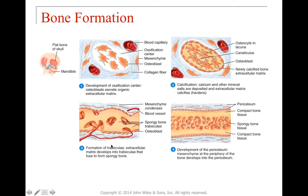Once the matrix has hardened, trabeculae form — little regions with holes that allow a network. These trabeculae fuse to form spongy bone in the adult, with spongy bone in the center and compact bone on the outside. Surrounding all of this is the periosteum, which develops from mesenchymal cells at the periphery — that is the final stage of intramembranous ossification.